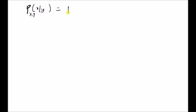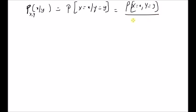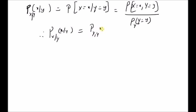The conditional probability mass function is defined as P_{X|Y}(x|y) = P(X = x | Y = y), which is given by the ratio of the joint probability mass function P(X = x, Y = y) divided by the marginal probability mass function P(Y = y). This is the definition of the conditional probability mass function.